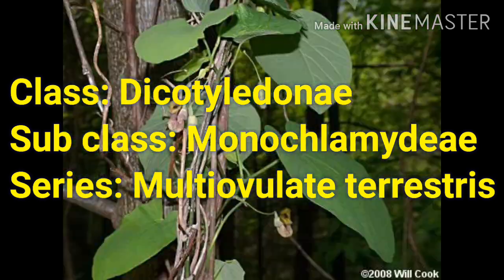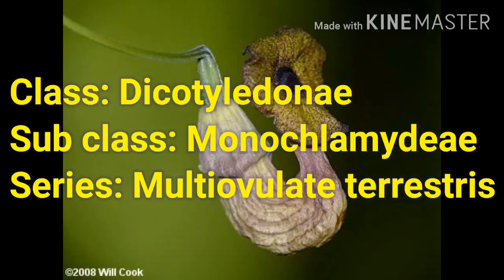In Monochlamydeae, there is no distinction between calyx and corolla. Perianth lobes are present; it is one whorl or more.